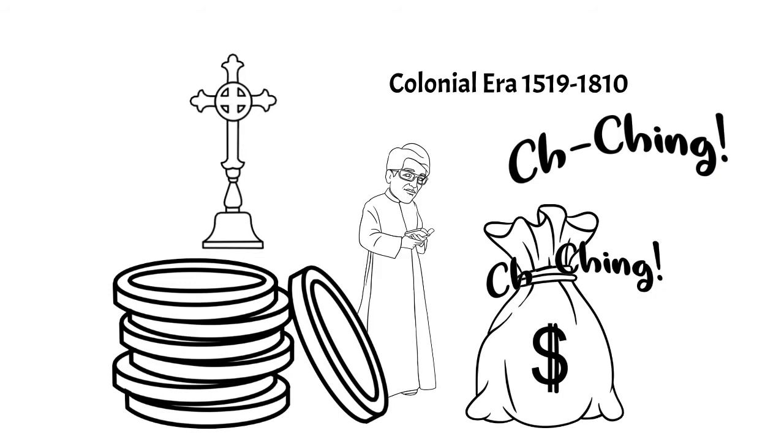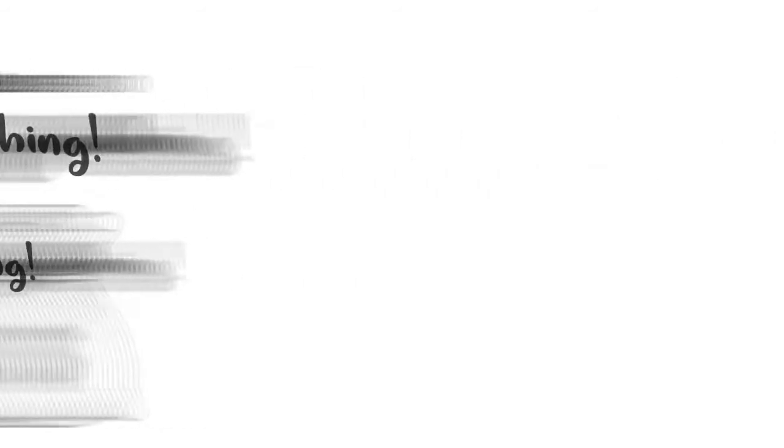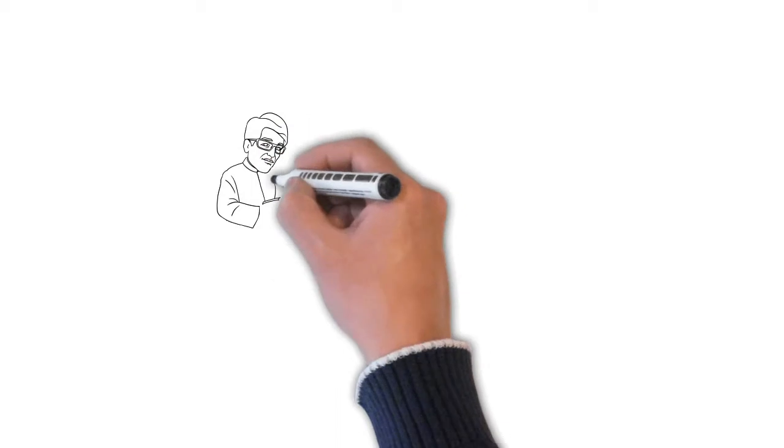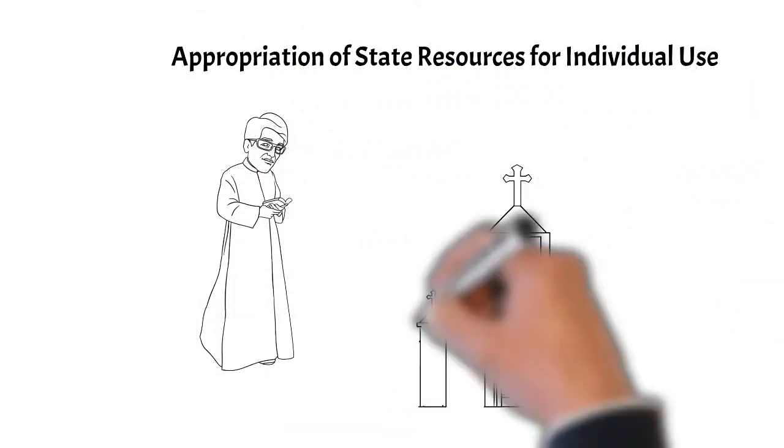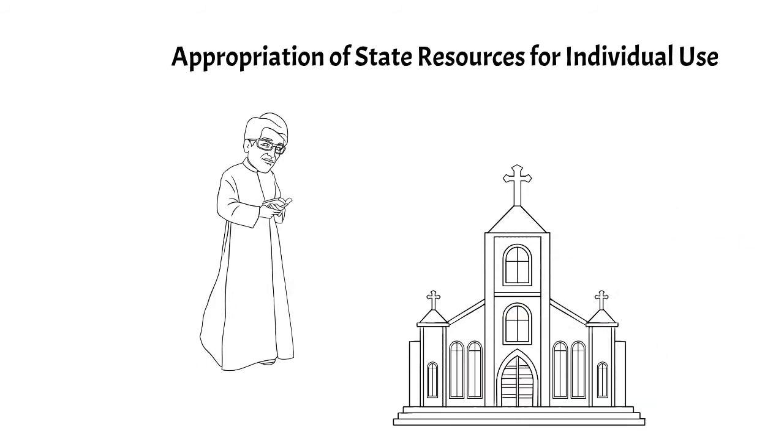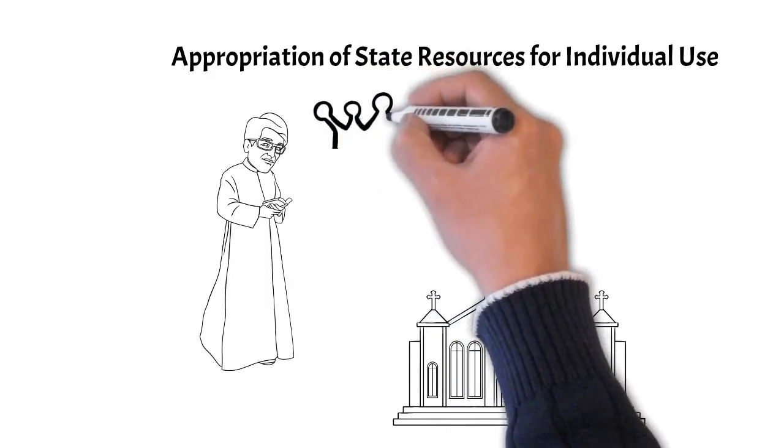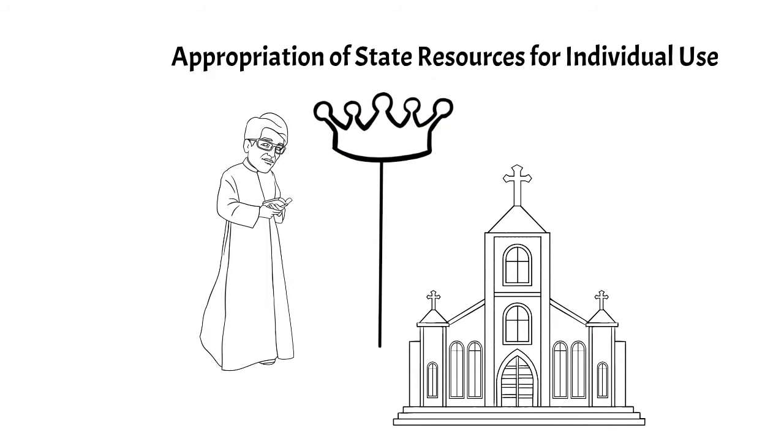So corruption in this sense, back in the colonial era in Mexico, was the appropriation of the state's resources for individual use. The church was not immune to this as well. The church raised its own taxes in the form of tithes and could appoint officials to different posts. Now, one could definitely argue that this situation was to the detriment of the crown, the church leadership, and the people, but this was a common practice and to some extent survived after the colonial period.